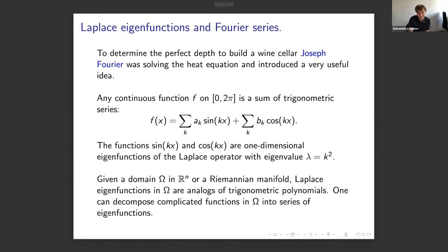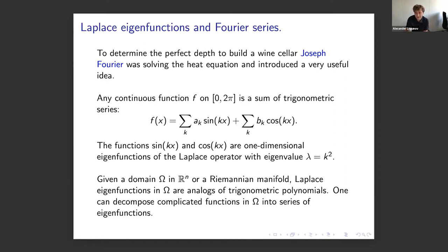We are stuck studying only zeros there. One simple example to keep in mind is the torus, where you can think about trigonometric polynomials of several variables. In the one-dimensional case, Laplace eigenfunctions are just sines and cosines with argument kx. As you increase k, the higher the frequency, the more zeros the eigenfunction has. The situation becomes more difficult in higher dimensions, especially when you cannot separate variables.